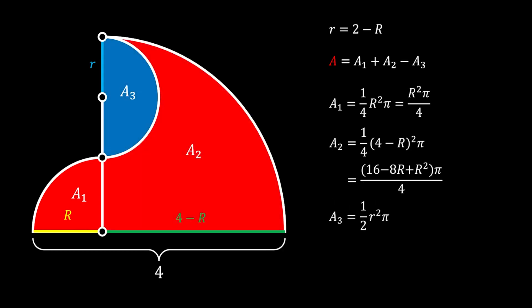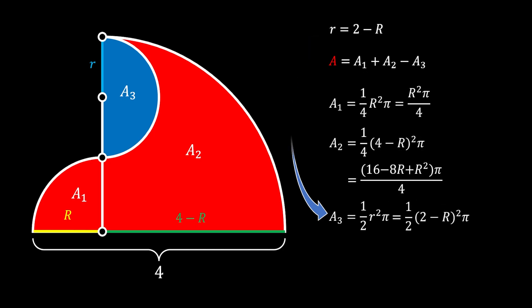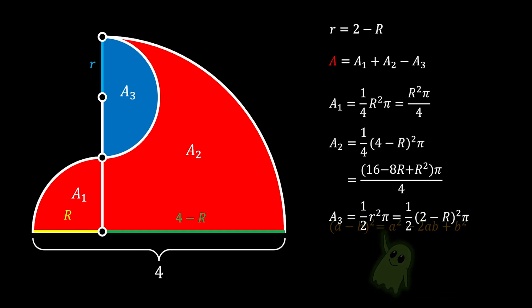Now let's go to area number 3, the half circle. Its area must be equal to one-half of r squared times pi. Since we already have the value for the radius of this small half circle, we substitute that value in. We can develop this further using the square of binomial formula, and we get that area 3 must be equal to (4 minus 4R plus R squared) times pi over 2.